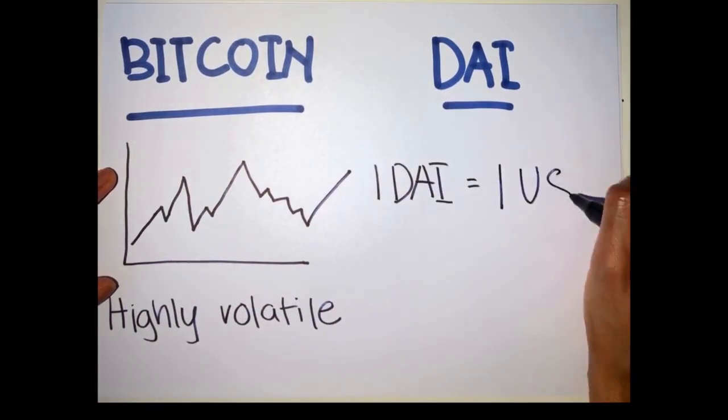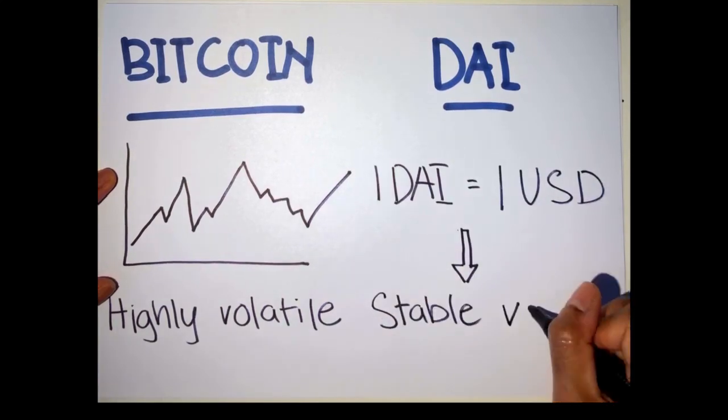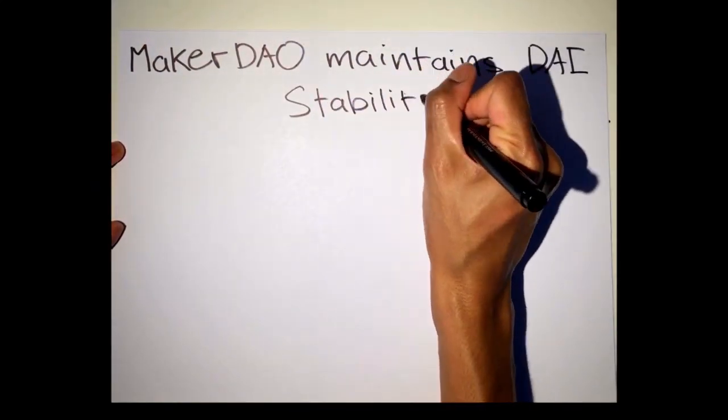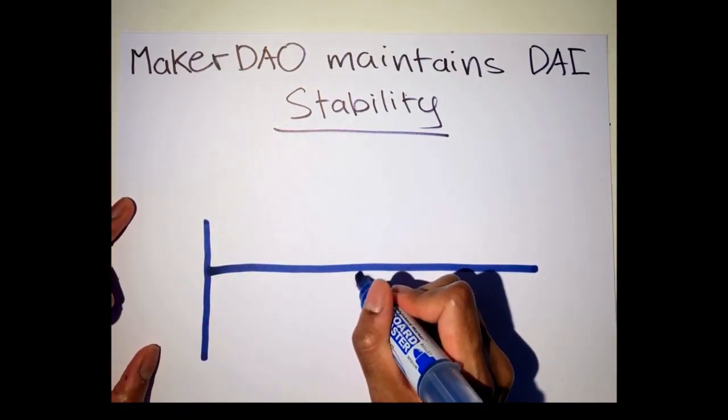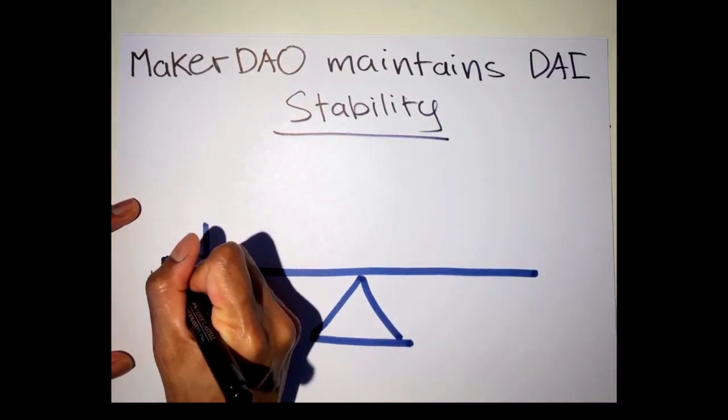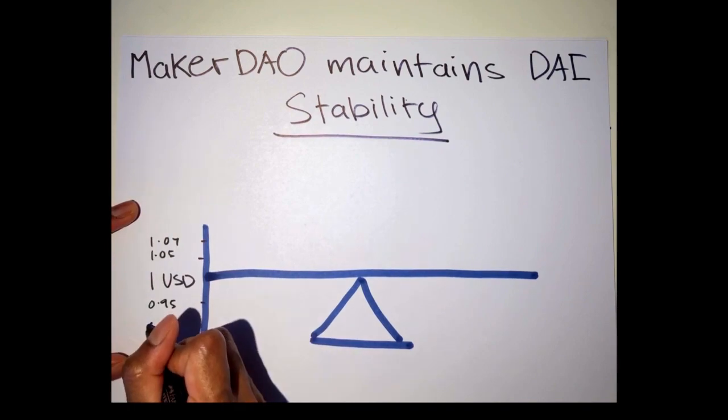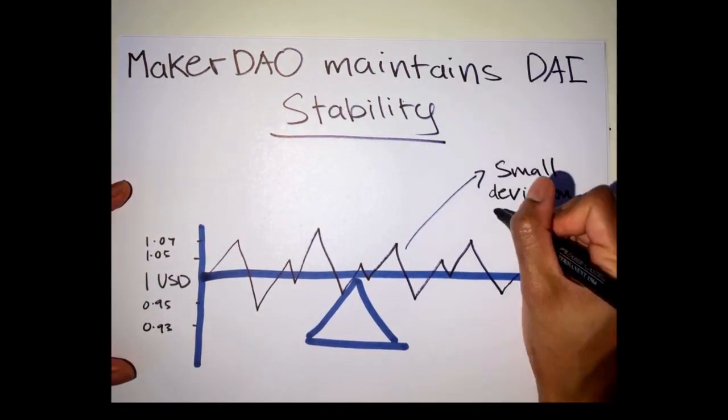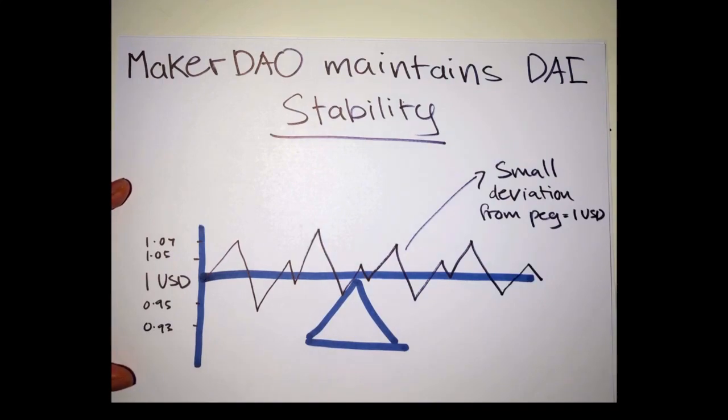So in order to maintain its fixed peg to the US dollar, DAI needs a system. So that's where MakerDAO comes in. MakerDAO is the protocol that stabilizes the DAI stablecoin to ensure that one DAI is always one USD. Meaning the protocol ensures that there isn't too much DAI or too little DAI in circulation.